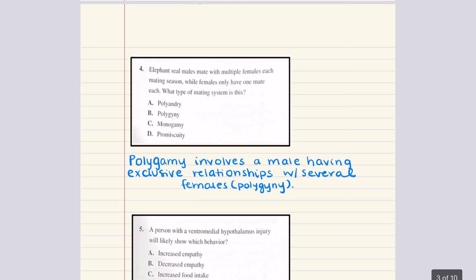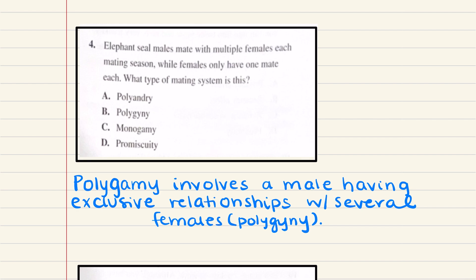Let's go ahead and move into problem number four. Problem four says elephant seal males mate with multiple females each mating season while females only have one mate each. What type of mating system is this? Now a mating system describes the way in which a group is organized in terms of sexual behavior. Monogamy, this consists of exclusive mating relationships, which is obviously not what is being explained here. So we can go ahead and cancel that out. Now promiscuity, this allows a member of one sex to mate with any member of the opposite sex without exclusivity. Now here in this kind of mating system, what we see is that the males have multiple partners, but the females only have one partner. So promiscuity doesn't make sense in this case as well.